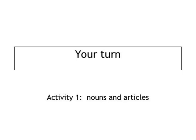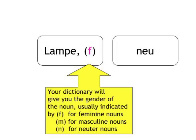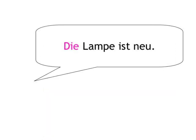Activity 1. In this first activity, we'll give you a noun like Lampe and an adjective like Neu. You can now form the sentence Die Lampe ist neu. Remember, speak loudly. So let's start.